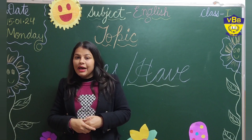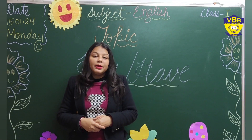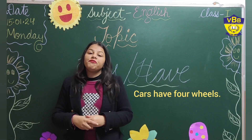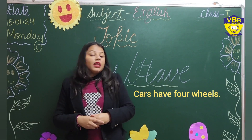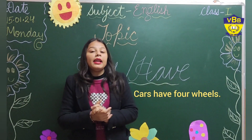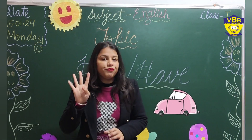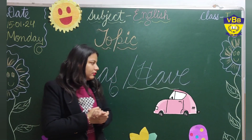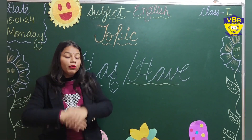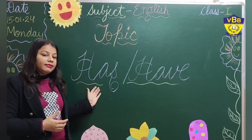My next example is: Cars have four wheels. Here we are talking about so many cars. What does a car have? They have four wheels. So that is why we have used 'have,' because here we are talking about so many cars.